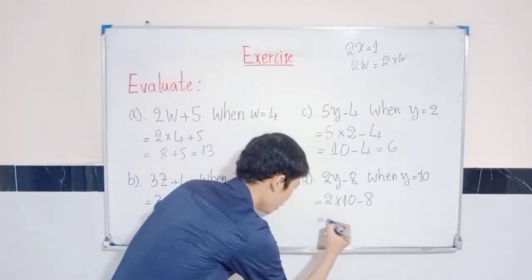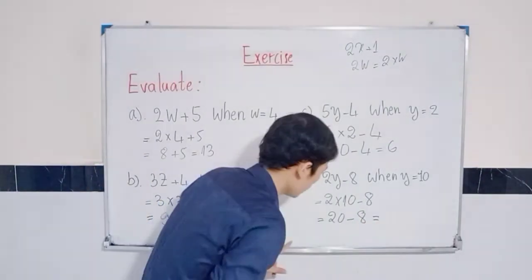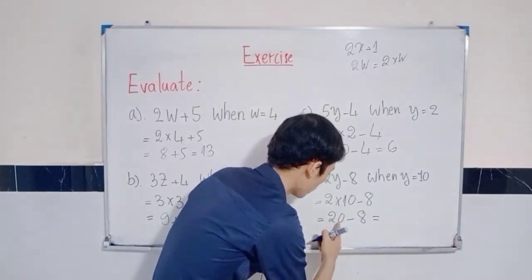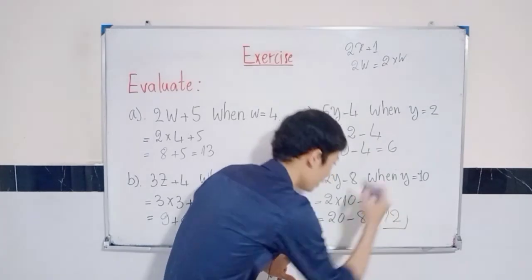2 times 10 is equal to 20. 20 minus 8 is equal to 12. This is the answer. Finish.